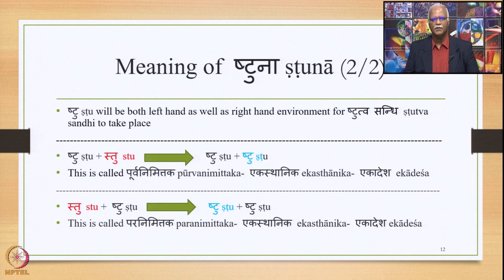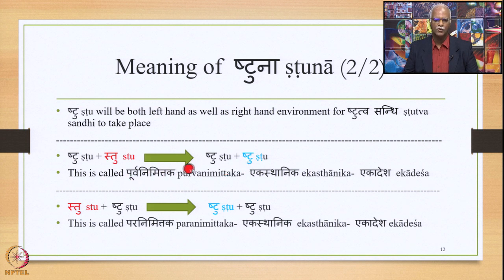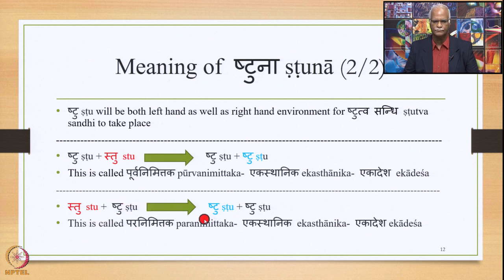So we can have Shtu plus Stu as the input where Shtu acts as the left-hand side environment or Purvanimittaka, and this Stu will still be substituted by Shtu. This is called Purvanimittaka Ekasthanika Ekadesha. And when we have Stu plus Shtu where Shtu is the Nimitta but this is Paranimittaka, even in this case Stu will be substituted by Shtu. This is also called Paranimittaka Ekasthanika Ekadesha.